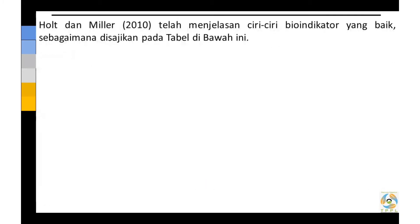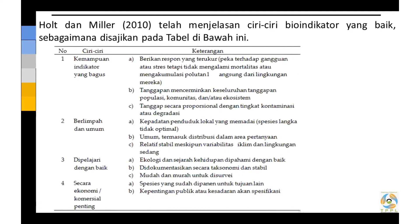Selanjutnya, menurut Hort dan Miller tahun 2010, ciri-ciri bioindikator yang baik dapat disajikan pada tabel berikut. Ada empat. Yang pertama adalah kemampuan indikator yang bagus, artinya memberikan respon yang terukur, peka terhadap gangguan atau perubahan, atau adanya stres yang diakibatkan oleh antropogenik atau manusia, sehingga mengalami mortalitas atau mengakumulasi polutan langsung dari lingkungan mereka.